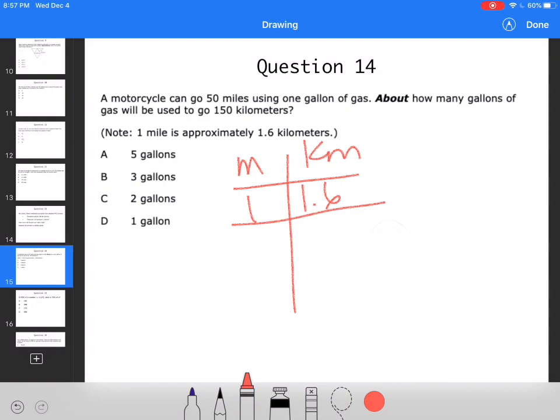So if I want to figure out what 50 miles is, I'm going to multiply by 50. It means I'm going to multiply this side by 50 and I figure out that it's about 80 kilometers.